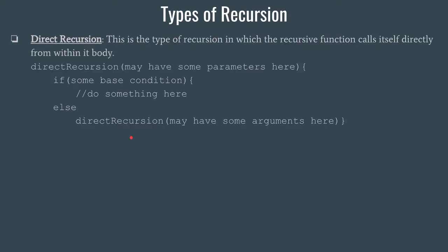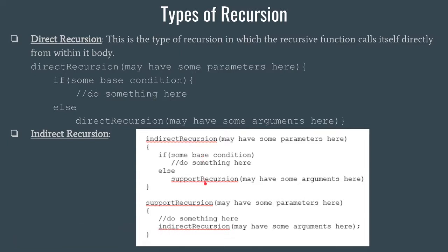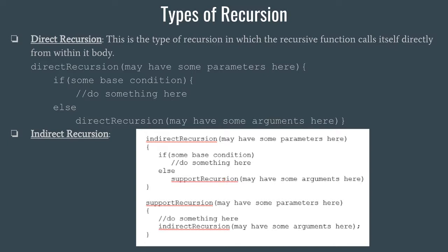Next we have direct recursion. In direct recursion, the recursive call to the function is included within the function body itself — the function calls itself directly. In indirect recursion, some other function is called inside the body of this function, and from that second function a call is made back to the first. So although we are calling the method recursively, we are not doing it directly — that is the difference between direct and indirect recursion.